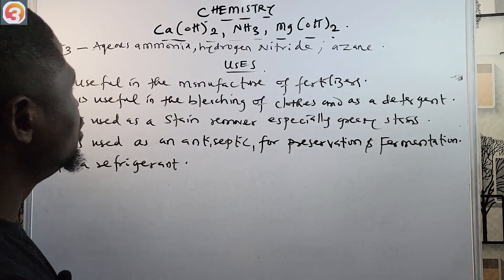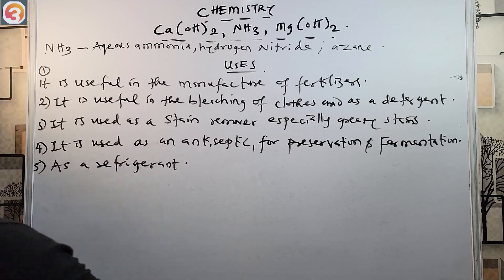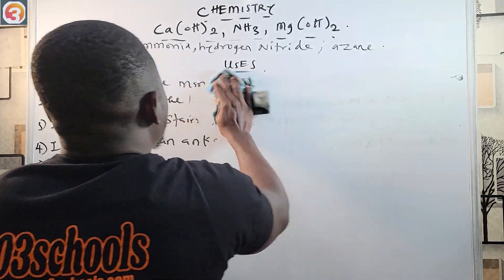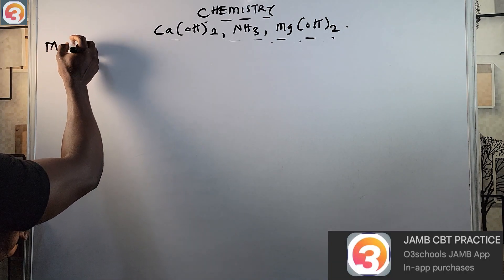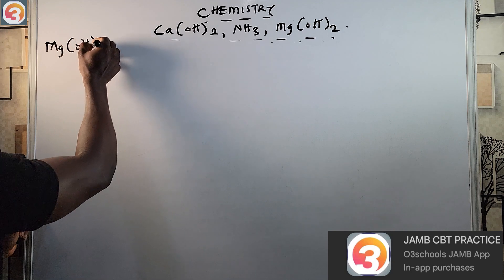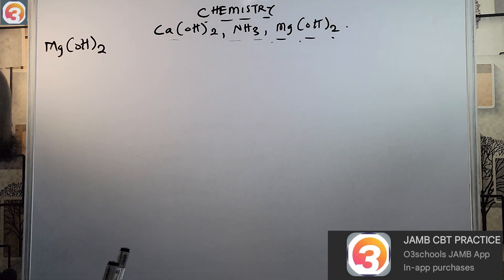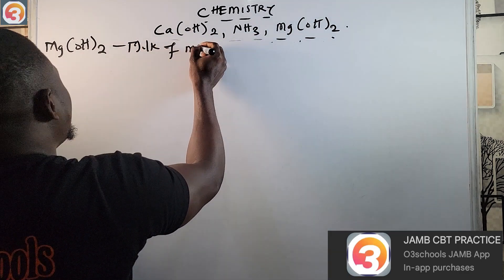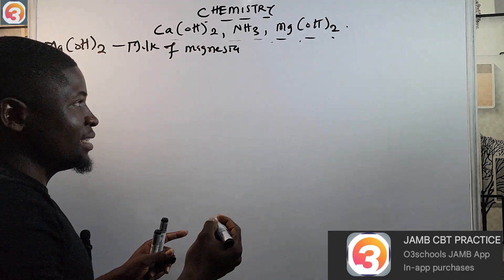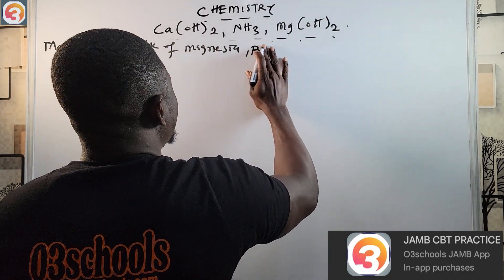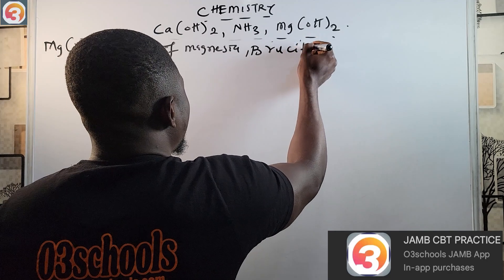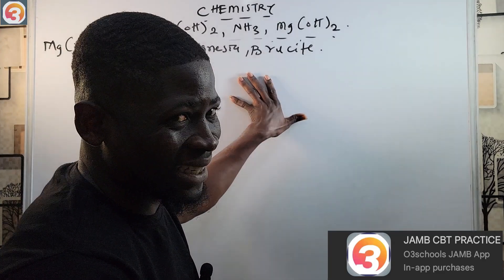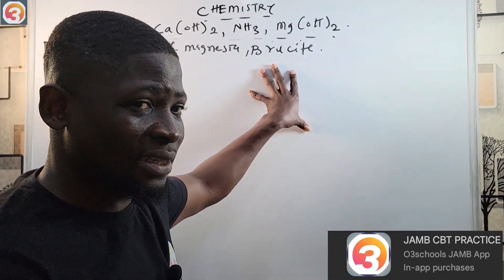Now let's quickly see the uses of magnesium hydroxide — Mg(OH)₂. It is also called milk of magnesia or magnesia, and brucite (B-R-U-C-I-T-E).